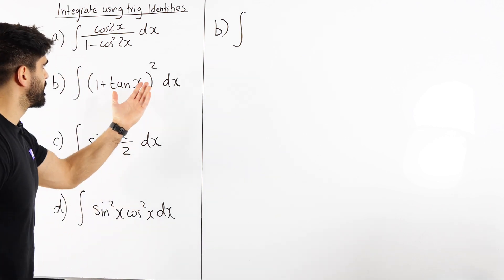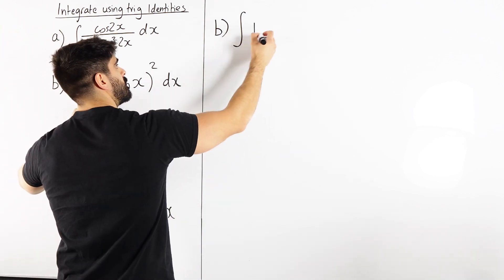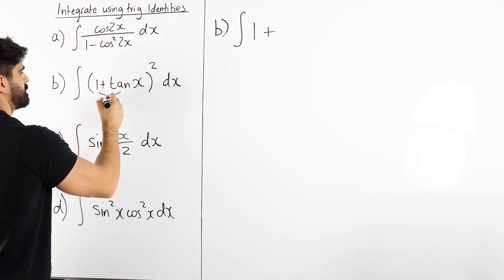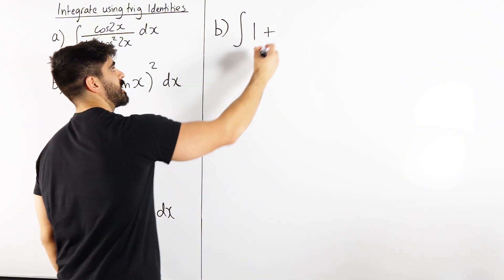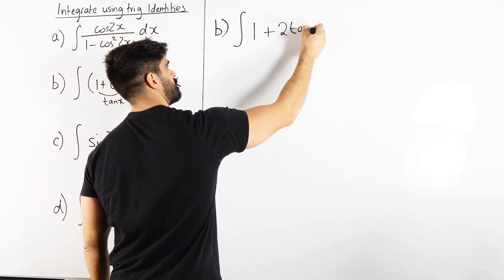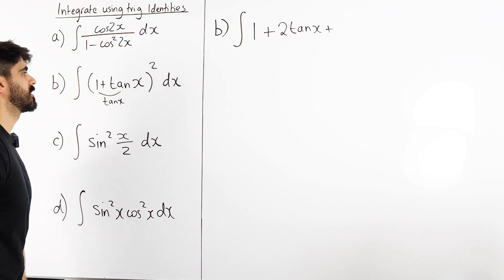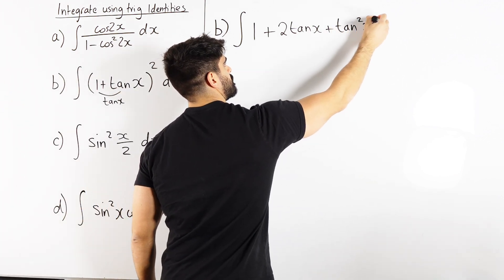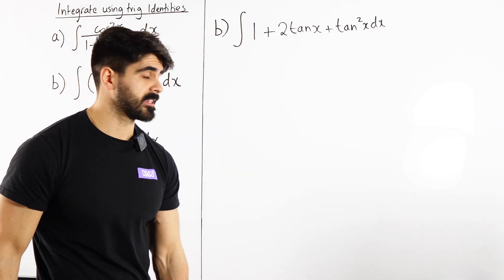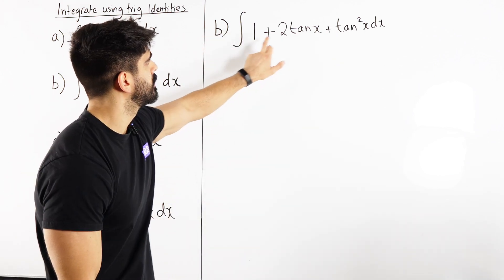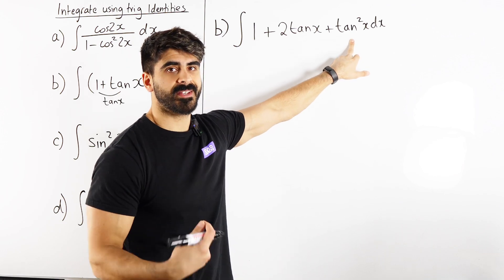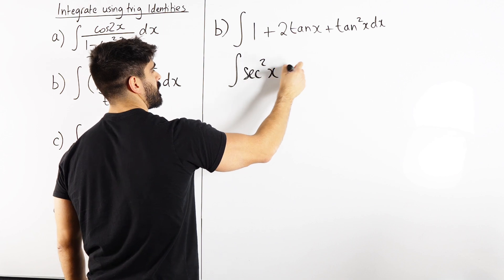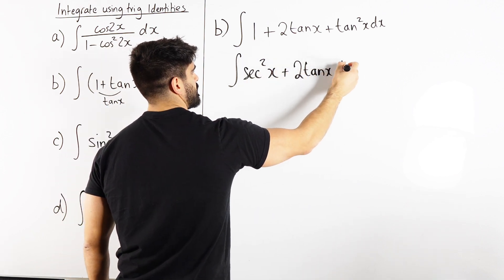The quick way to expand square brackets: you square the first term, 1 plus, multiply these together, this times this is tan x, you double it, so 2 tan x, plus square the last term tan squared x dx. Now we might recognize something. 1 plus tan squared is sec squared. So we actually have the integral of sec squared x plus 2 tan x dx.